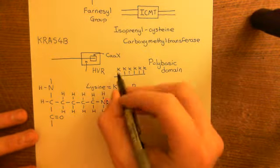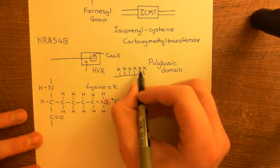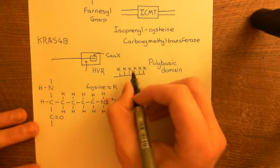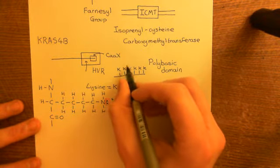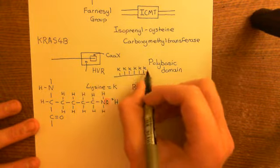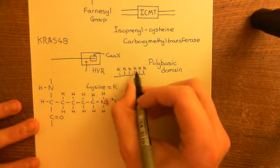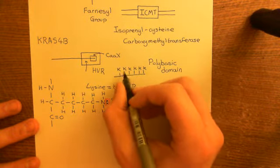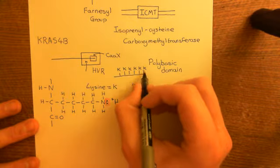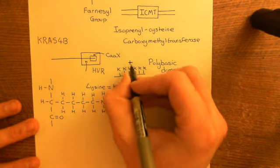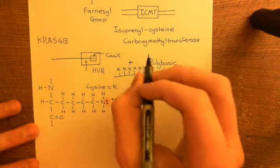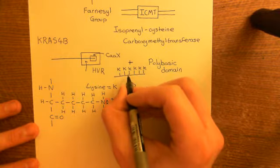The significance is that some of these lysines at any one time will have protons associated with them and some won't — they're in a constant state of flux. So if you take a snapshot, you'll find some have protons and some don't, but you'll always find some do. This means the polybasic domain overall will always carry some positive charge — maybe two or three positive charges at any one time.